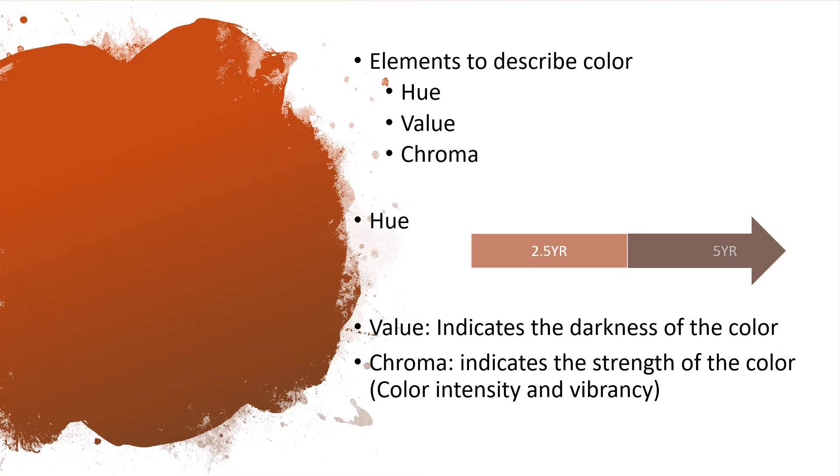And then value, the value indicates the darkness of the color and it could vary from 0 to 10. Zero means black and 10 means white. So in-between numbers, it indicates different darkness levels.